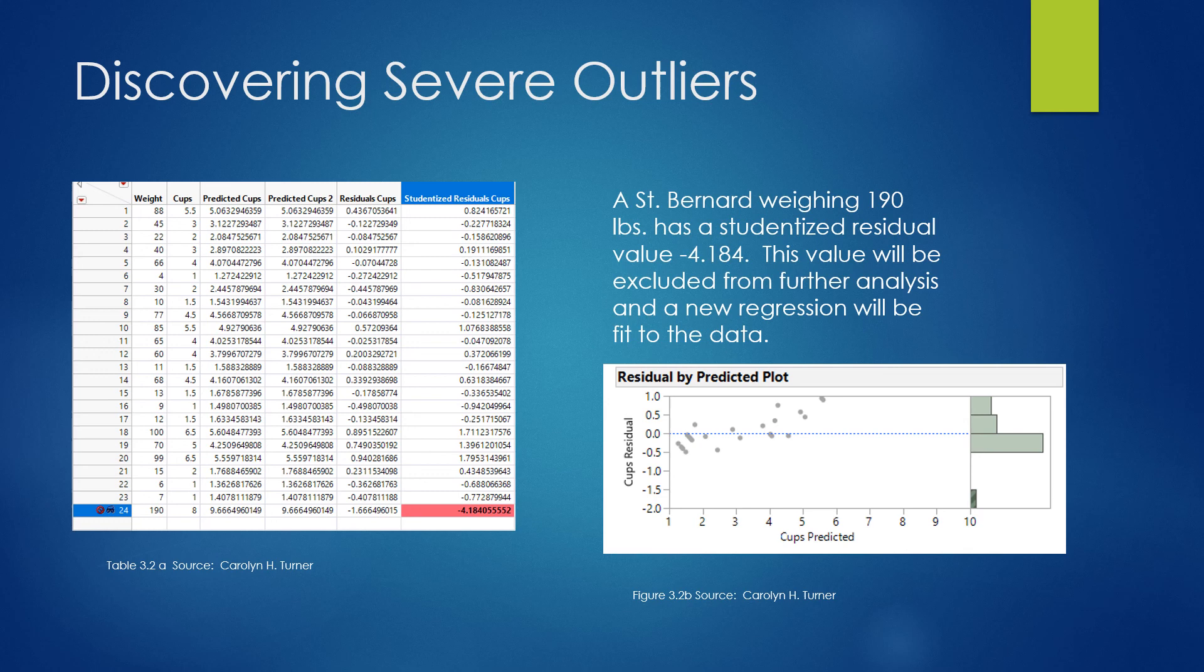In understanding residuals, we'll start with the jump output here. The first column of numbers are simply identifiers for each data point. The weight is your x variable, cups is the y variable, and then you have predicted cups. So the difference there, the original cups were the observed values. The predicted cups occur from putting the 88-pound dog into the equation, and that is our value here of 5.06.